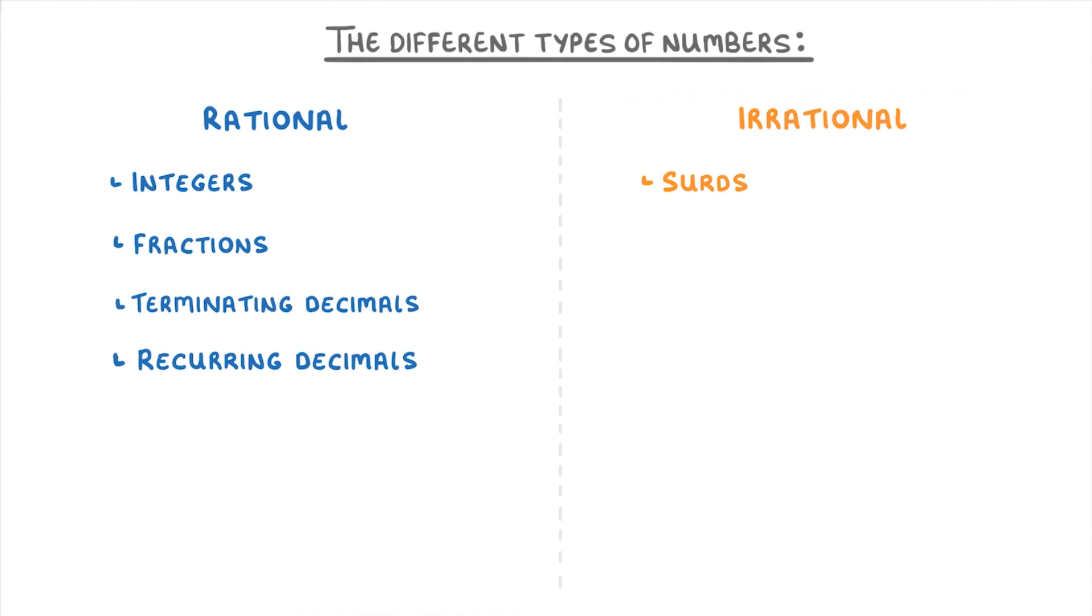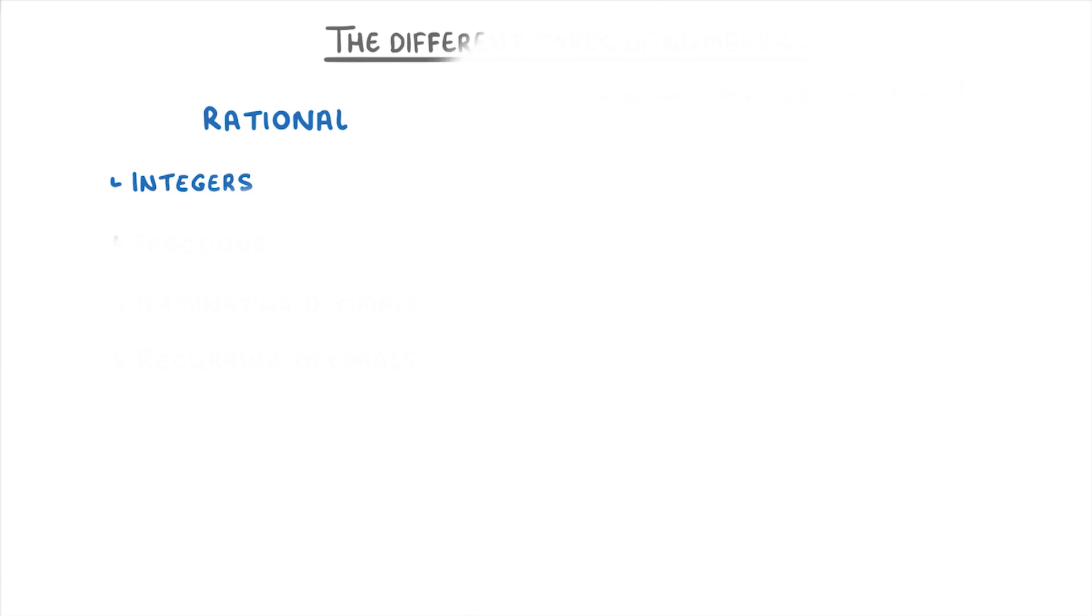In this video, we'll go through them one by one and look at some examples of each. If we start with integers, this is just another name for a whole number, so it could be a positive whole number.